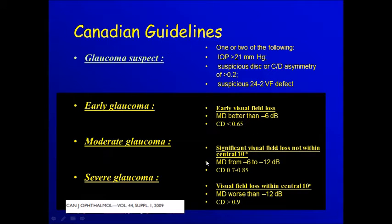Moderate glaucoma where we have significant field changes in the upper or lower hemisphere, but not affecting the central 10 degrees, with a mean deviation between minus six to minus twelve, and a cup-disc ratio 0.7 up to 0.85.